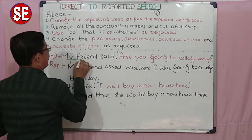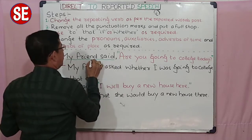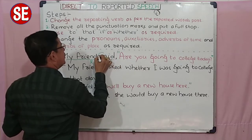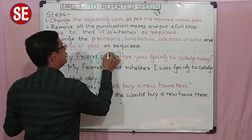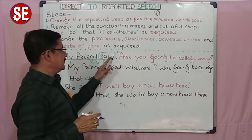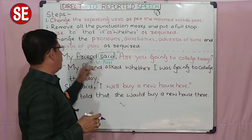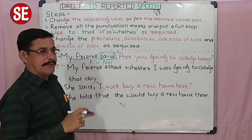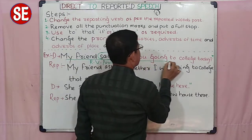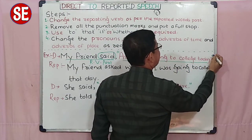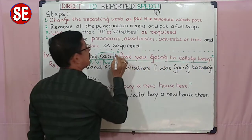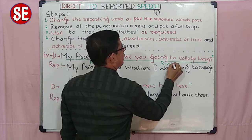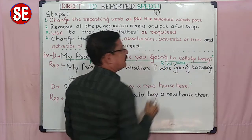Number one, this is the reporting verb part — it is called the reporting verb part. This is the reporting verb. It is the reporting verb, and before the comma, from here to here, this part is known as the reporting verb part. And this one, in between the inverted commas, this part is known as the reported words part.